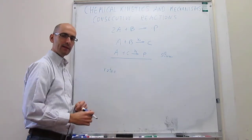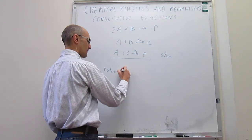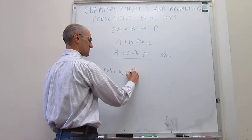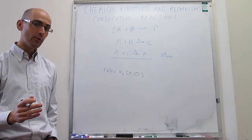So then we know that the rate law is determined by the slow step in this case. This rate law would be K2, concentration of A, concentration of C. That would be the rate law for the overall reaction.